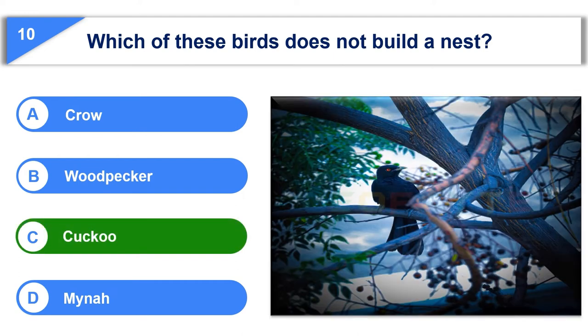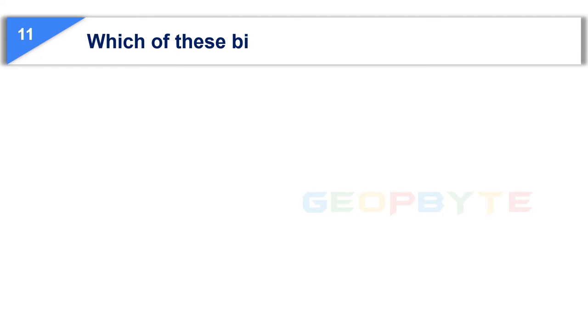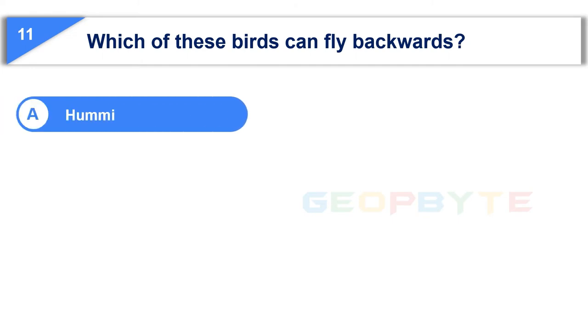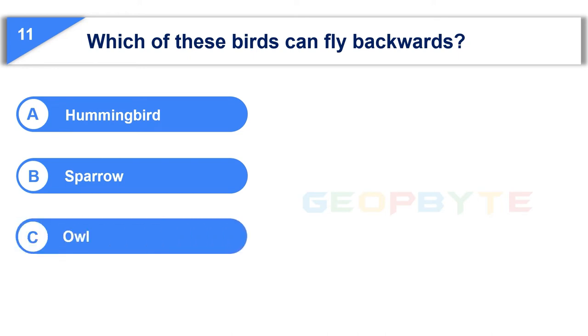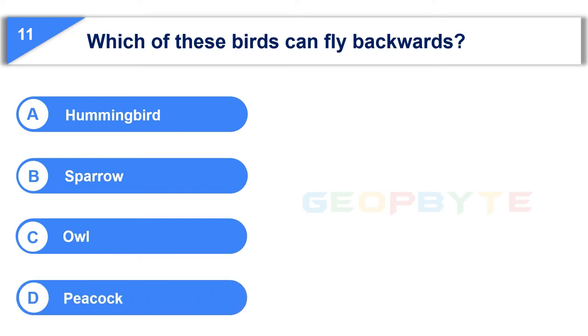Moving to the 11th question: which of these birds can fly backwards? Option A: Hummingbird. Option B: Sparrow. Option C: Owl. Option D: Peacock. Your time starts now.